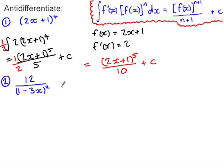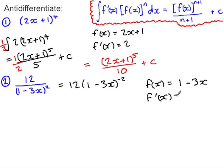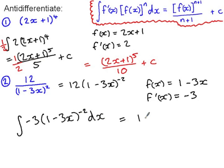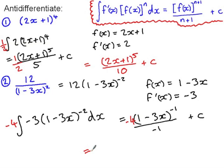The next example is written as a quotient, so I'll rewrite it as 12 times (1-3x)^(-2). If f(x) is 1-3x, then f'(x) is -3. Substituting into the formula, the integral of -3·(1-3x)^(-2) is (1-3x)^(-1) — raise the power by 1 and divide by the new power. But I actually need to multiply by -4 to get the expression I want. So simplifying, the answer is 4/(1-3x) plus c.